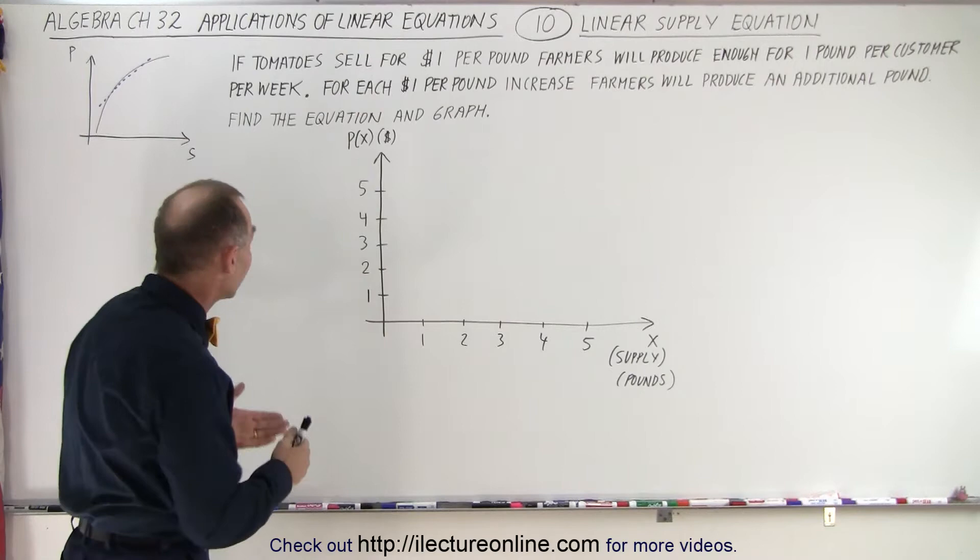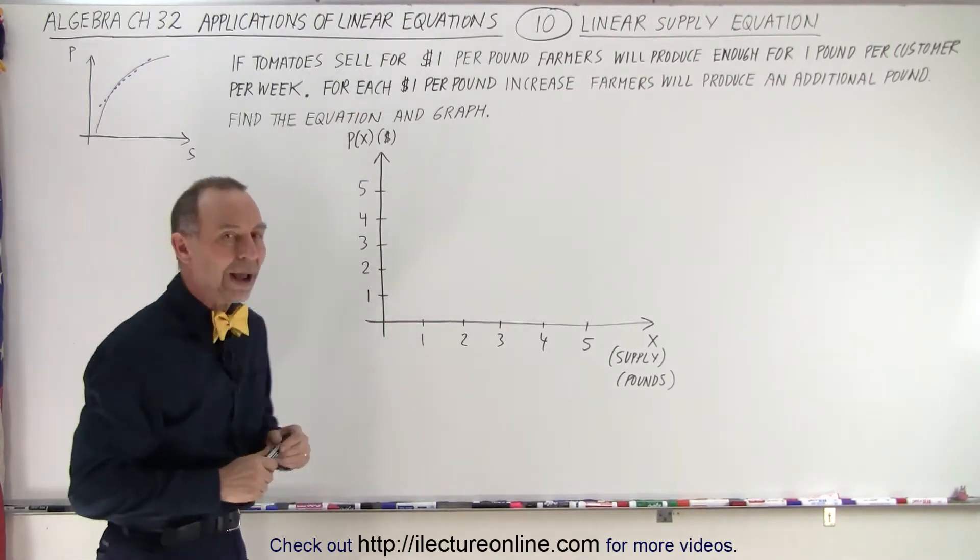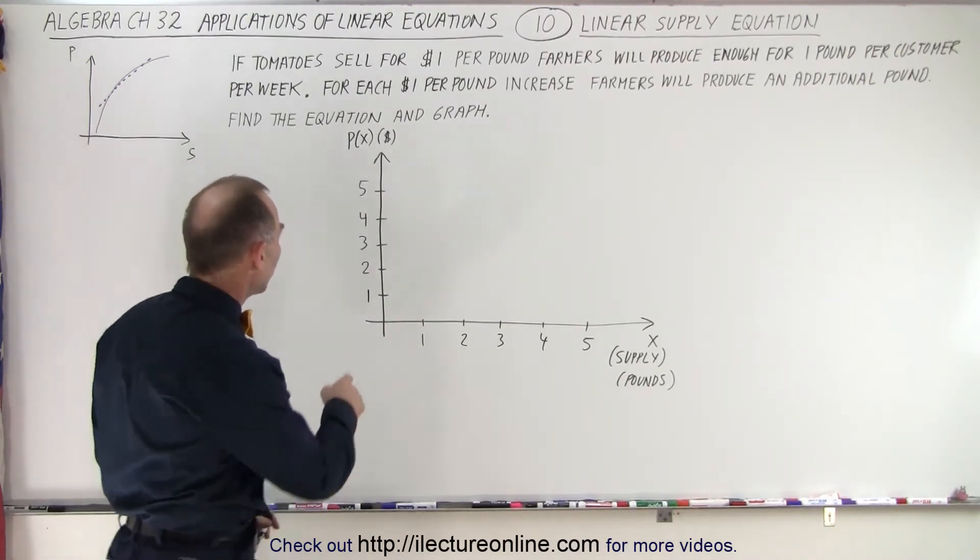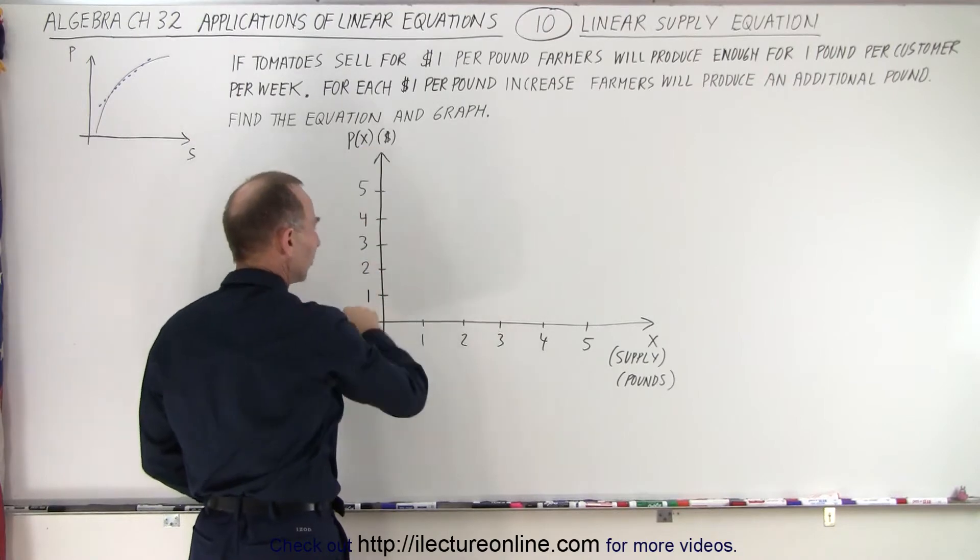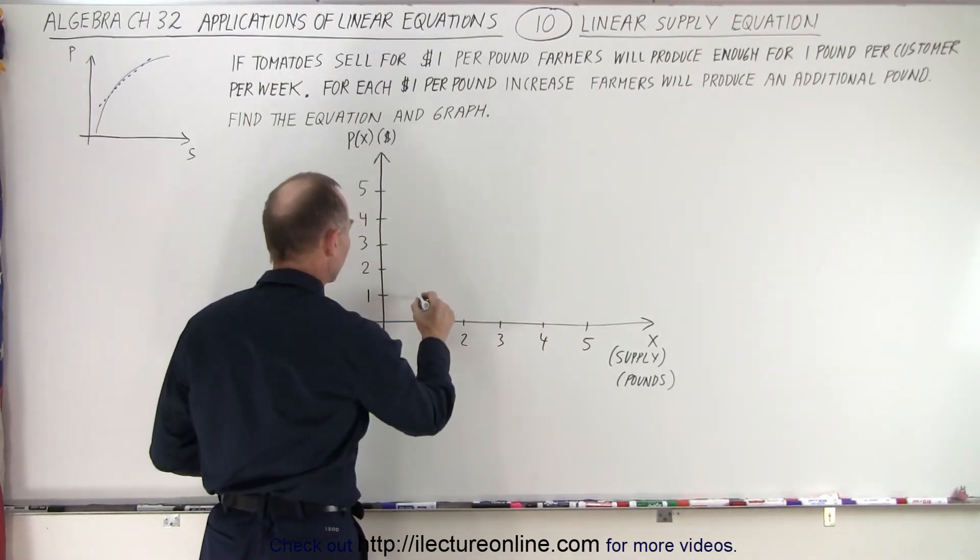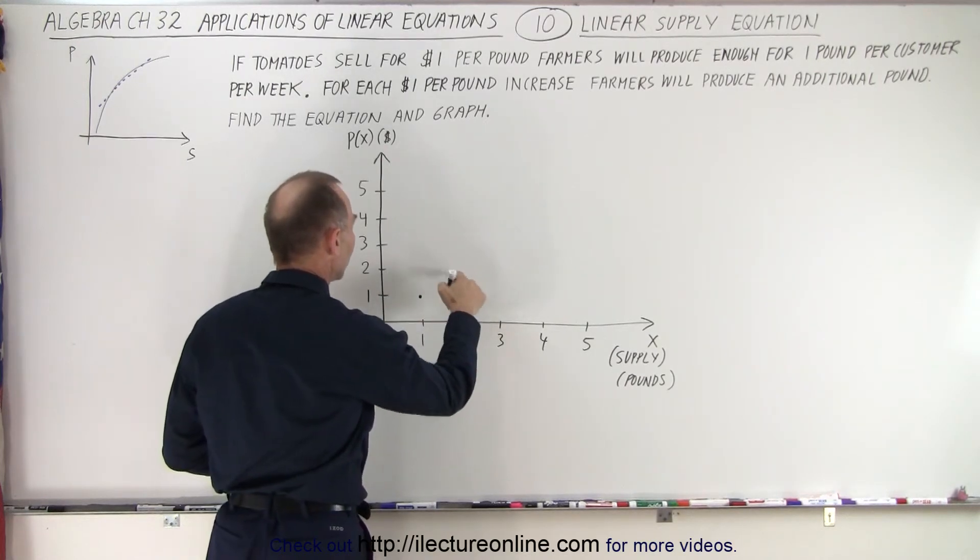And so what we're trying to do here is find the equation that describes that and then also graph that equation. So let's start with graphing. Start with for $1 a pound, this is dollars, this is the price, this is the supply, we'll provide one pound per customer. So it's right here. For each $1 increase, we'll supply one additional pound.